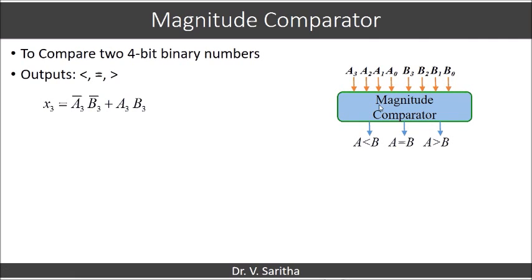To determine whether two bits are equal, we use the XNOR gate. We define X3 as the expression A3'B3' + A3B3. X3 becomes 1 when both A3 and B3 are 1, or both are 0 — that is, whenever A3 and B3 are equal.